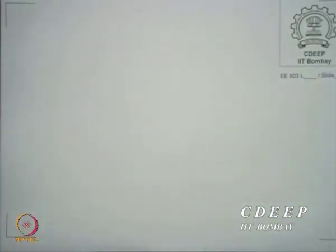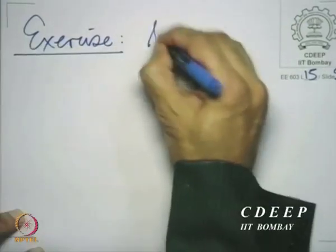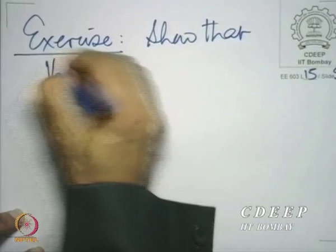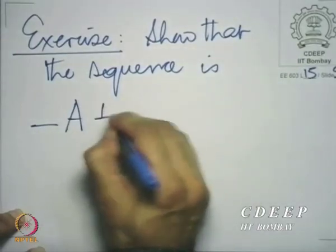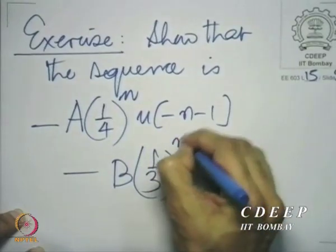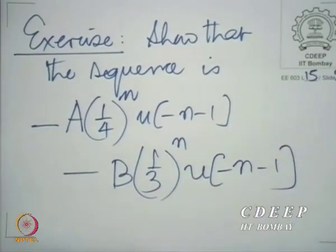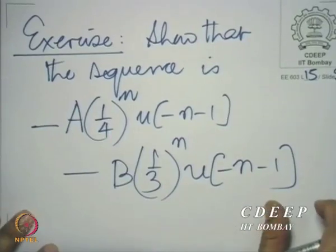I shall write down the answer and leave it to you to prove it as an exercise: show that the sequence is −A·(¼)ⁿ·u[−n−1] − B·(⅓)ⁿ·u[−n−1]. Now I will take the second possible region of convergence, where there is a little bit of trouble.